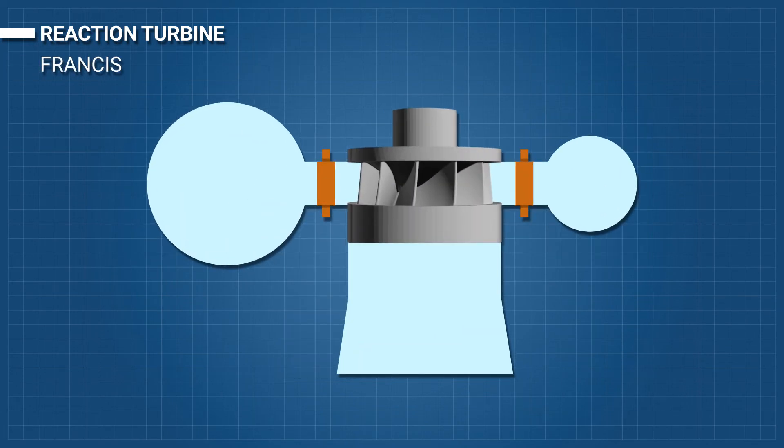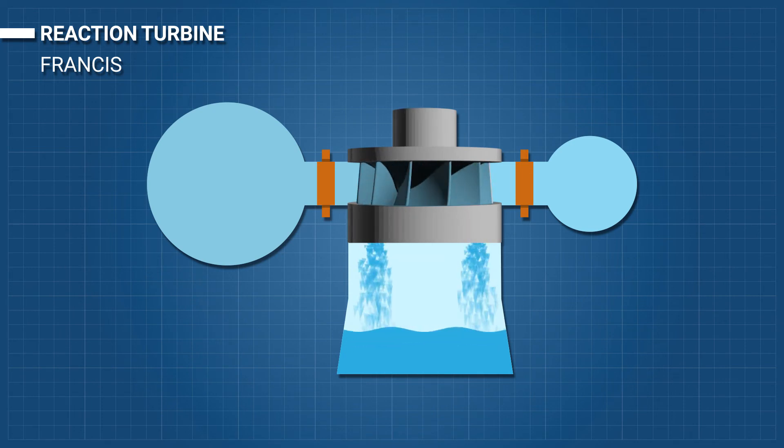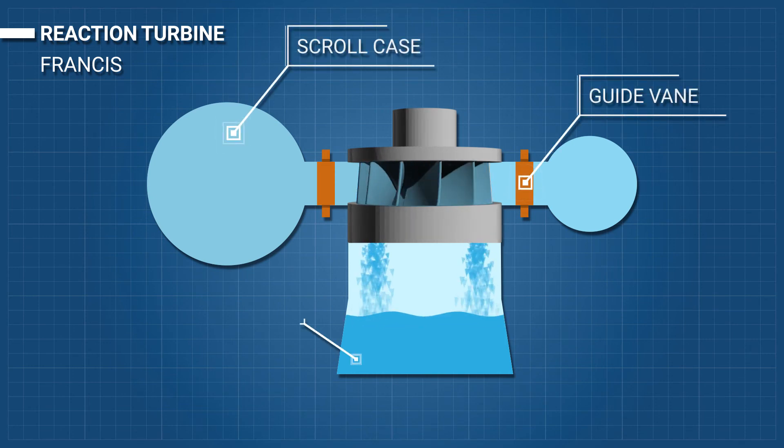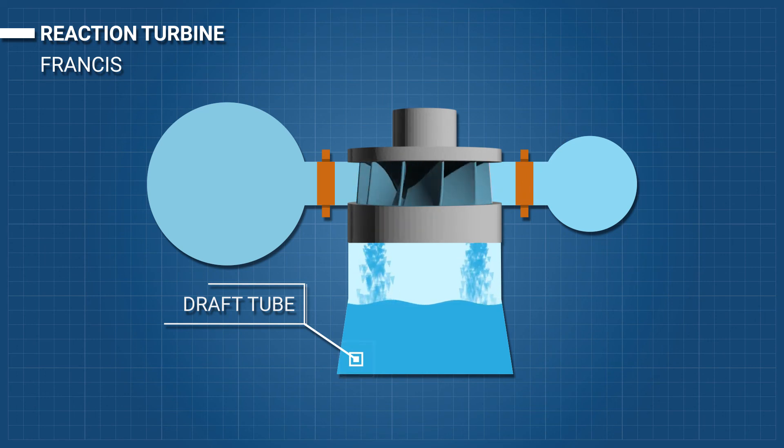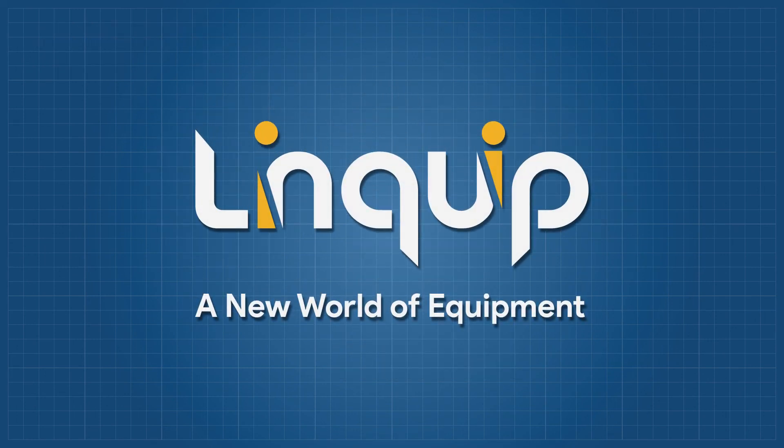Francis: A Francis turbine has a runner with fixed buckets or vanes, usually nine or more. Water enters just above the runner and all around it, and then falls through, causing it to spin. Besides the runner, the other major components are the scroll case, guide vane, and draft tube.